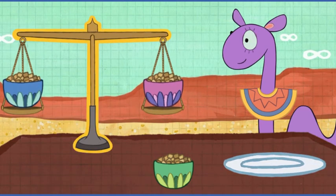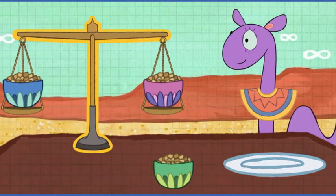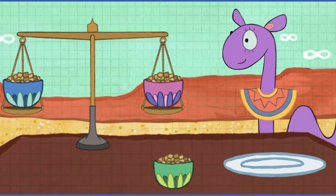When the pan balance is balanced, the arm goes straight across. That means these bowls are the same weight, but we're looking for the heavier bowl.